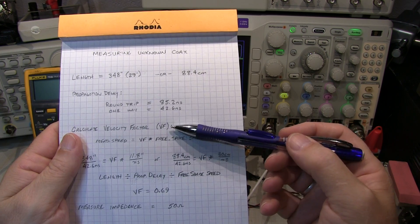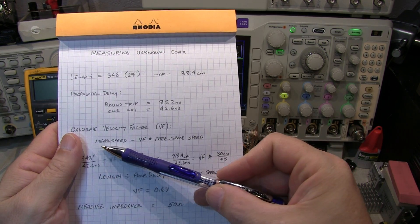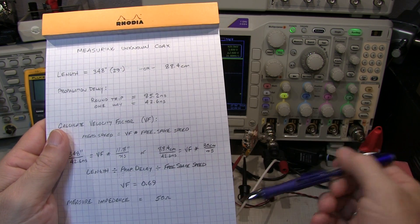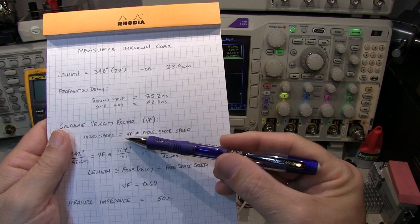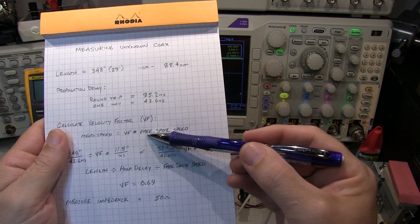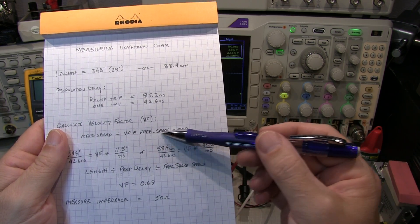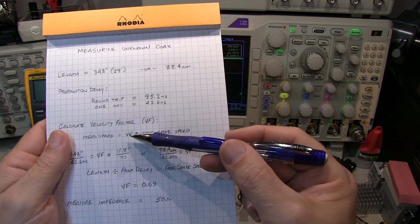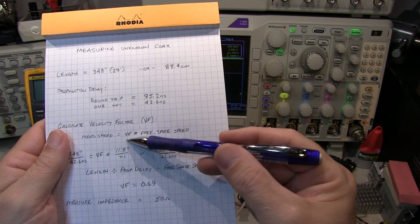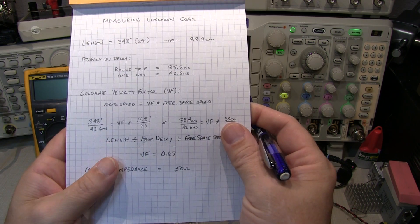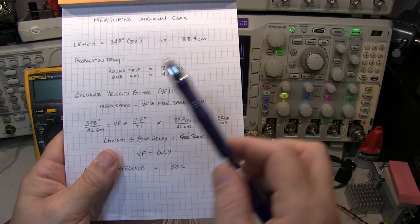The velocity factor can be defined as what is the measured speed through the medium, in this case the coax. That's equal to the velocity factor times the speed in free space. And we know the speed of light in free space. And now we know the measured speed so we can calculate velocity factor. So here it is for both types of units.